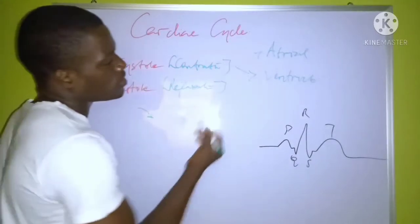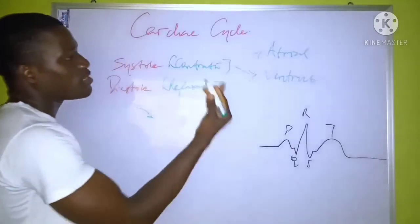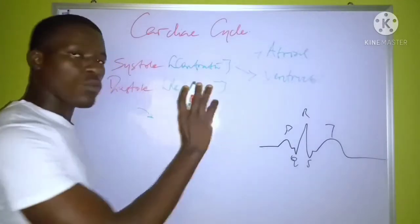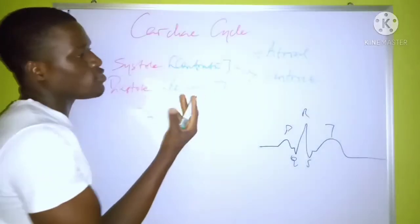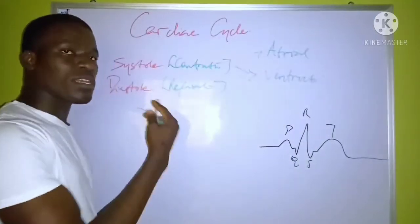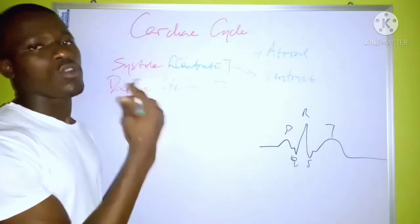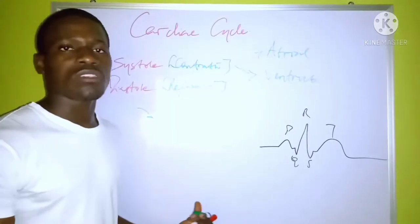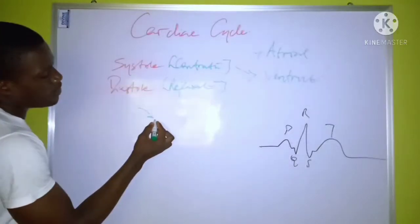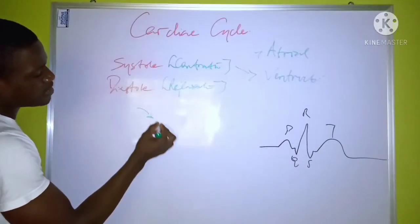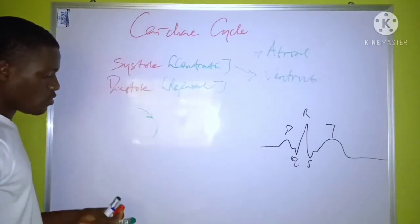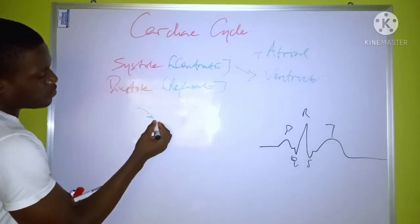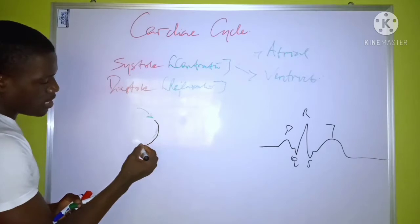Ventricular systole simply refers to ventricular contraction, and it is due to the impulse transmitted from the AV node to the other contracting fibres, down to the Purkinje fibres, which causes contraction of the ventricle. This is the next part of the cycle.